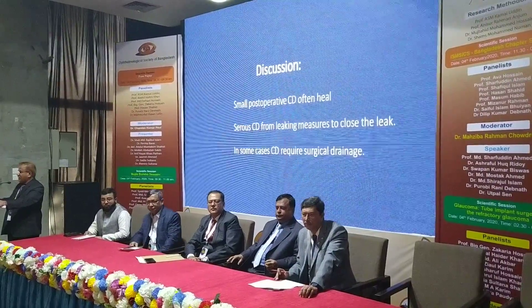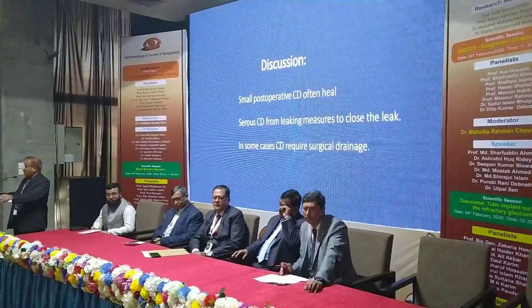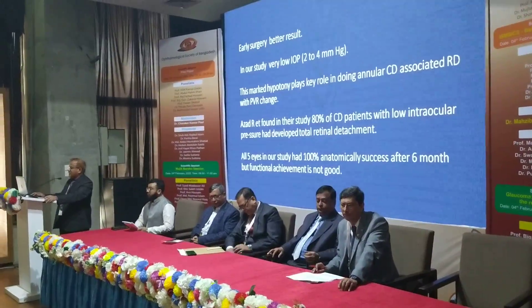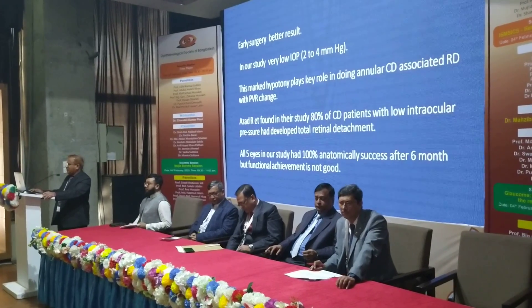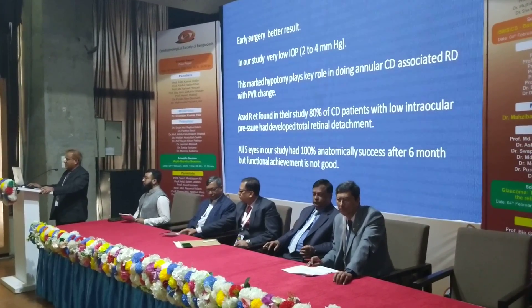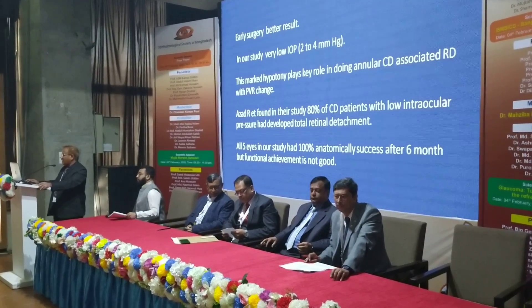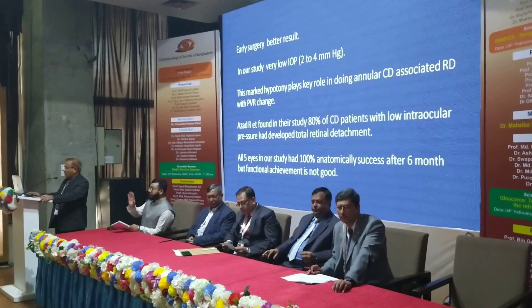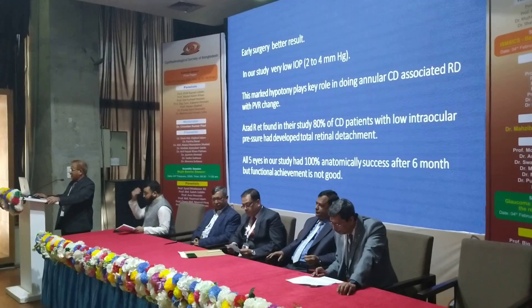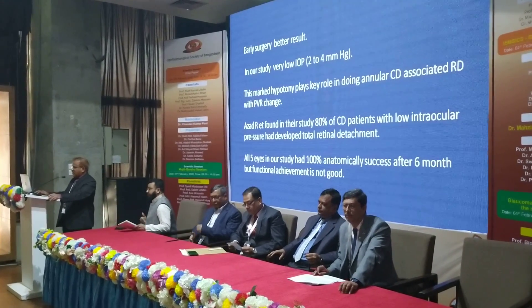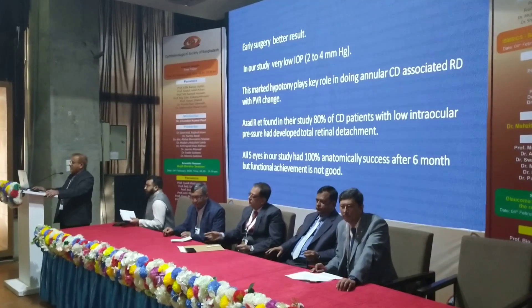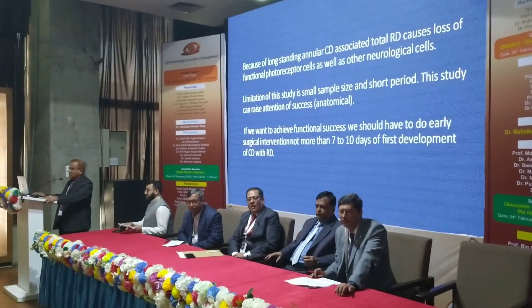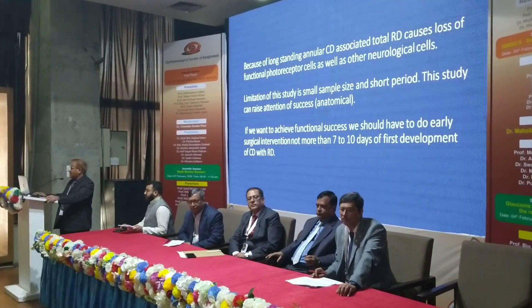In discussion, small series of serous choroidal detachment from leaking blebs require measures to close the leak. Some choroidal detachments require surgical drainage, and early surgery is better. In our study, marked hypotony of 2 to 4 mmHg played a role in causing annular choroidal detachment with retinal detachment and PVR cells. All five cases had 100% anatomical success, but after 6 months, functional outcomes were not good, because long-standing choroidal detachment with retinal detachment causes loss of functional photoreceptors and neurological cells.